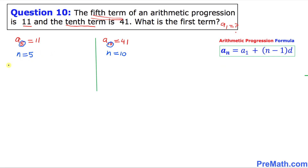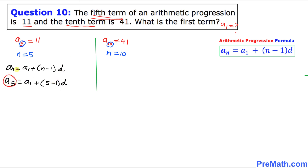Using the formula a sub n equals a sub 1 plus (n minus 1) times d, with a sub n being a sub 5: a sub 5 equals a sub 1 plus (5 minus 1) times d. Since a sub 5 equals 11, this becomes 11 equals a sub 1 plus 4d. We call this Equation 1.